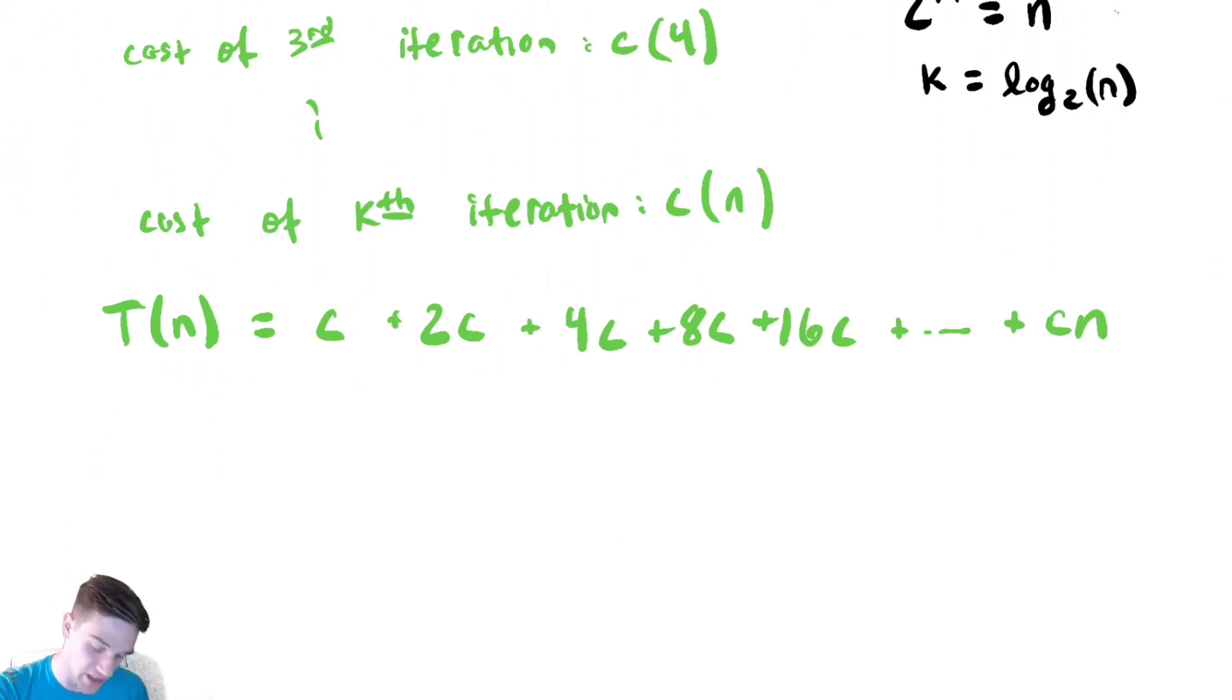What I'm going to do is I'm going to factor out the largest value of this summation, which is going to be that c times n at the end there. So we have cn. The first term then becomes 1 over n, then 2 over n, 4 over n, plus 8 over n, plus... Let me keep going.